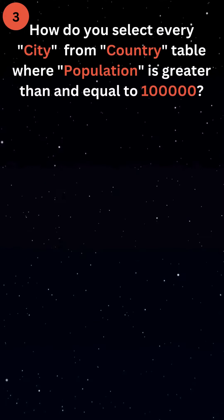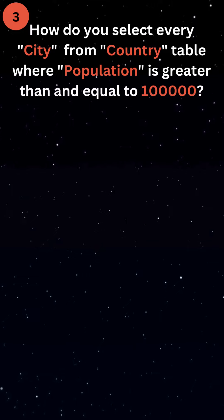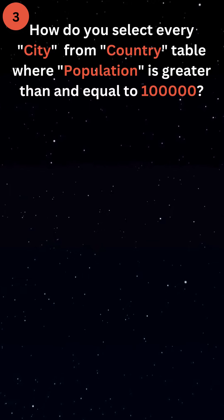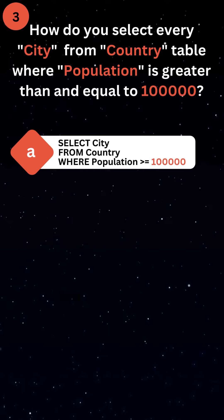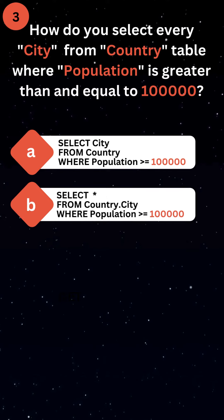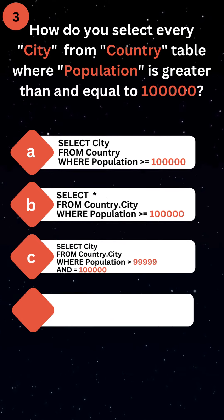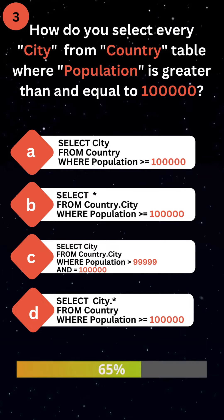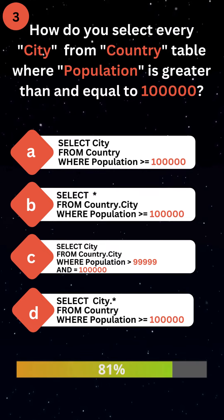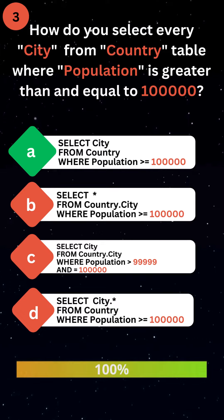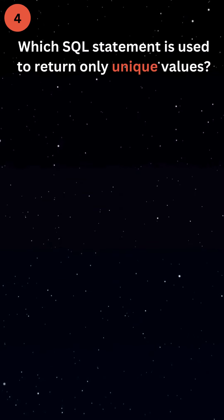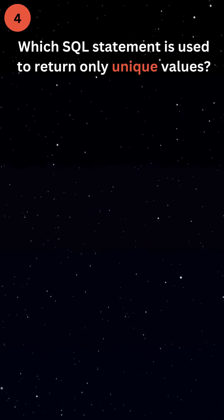How do you select every city from the country table where population is greater than or equal to 100,000? Which SQL statement is used to return only unique values?